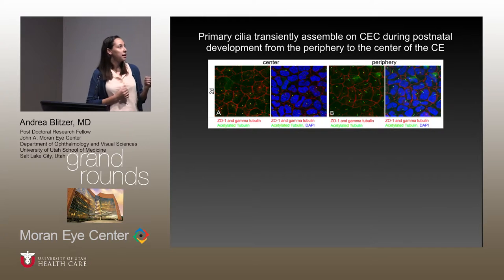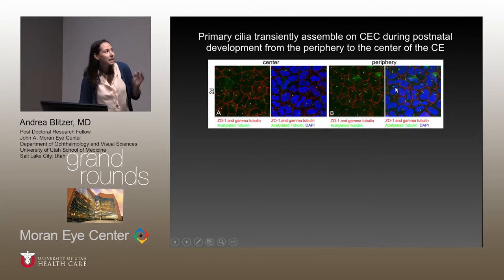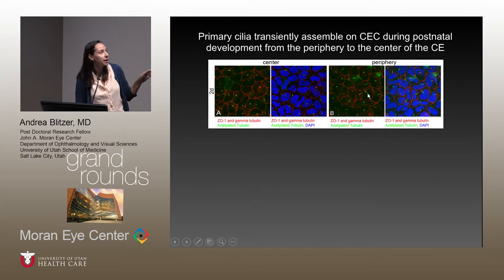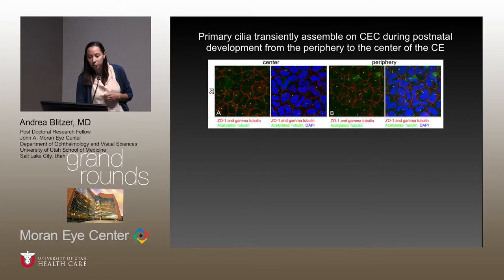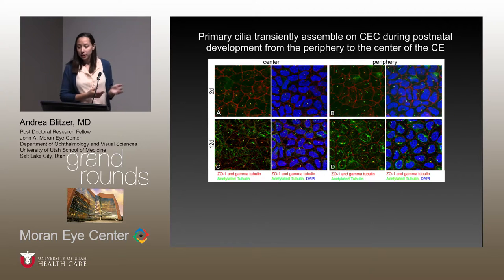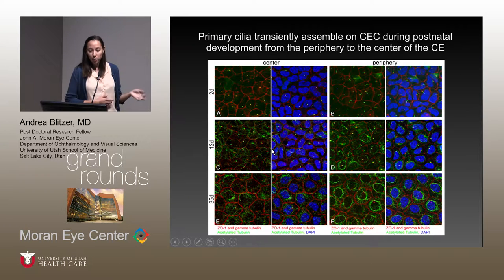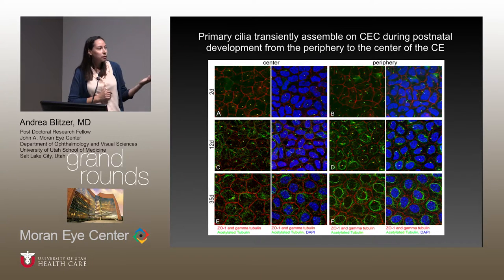Looking at the development of mouse cornea endothelium: at two days old, the center and periphery show very irregular cells — not the nice hexagons seen in adults — and especially at the periphery, there are really nice long cilia visible via acetylated tubulin staining. At 12 days, the cells start becoming more normal looking, and at the periphery the cilia are getting shorter, while at the center the cilia are now getting longer. At 35 days, which is close to normal adult form, cells are pretty hexagonal and there are no cilia, or if you do see cilia, they're very, very short.